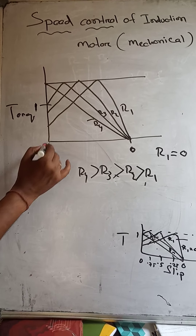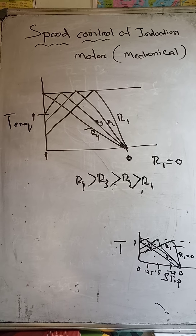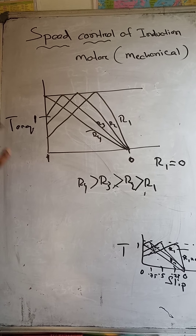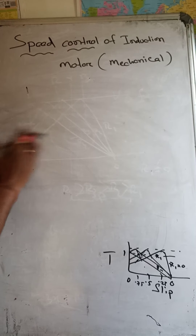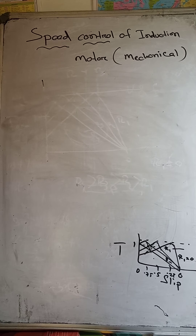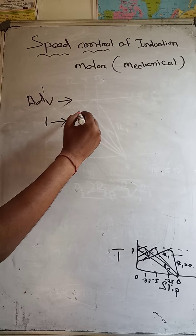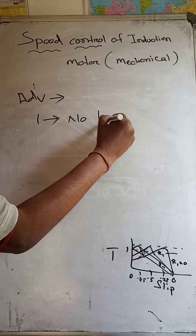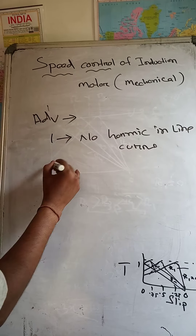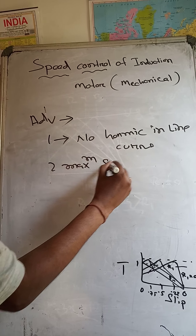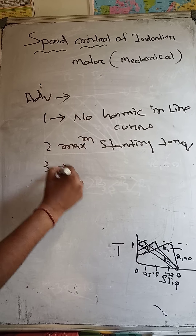From this graph, torque is at maximum and slip is at maximum. You can understand that the speed of a slip ring induction motor can be changed by changing the resistance in the rotor circuit. The disadvantage is that you cannot change the speed very smoothly. The advantages are: no harmonics in line current, maximum starting torque, and smooth starting.